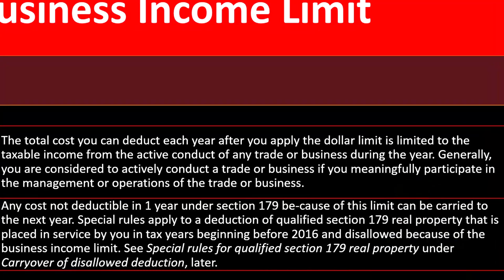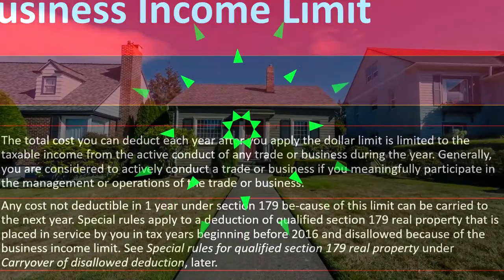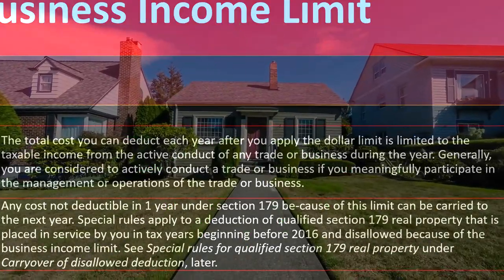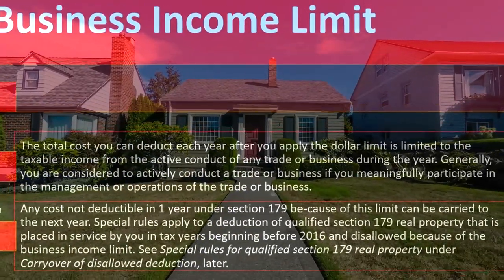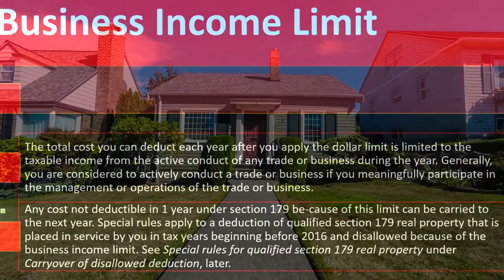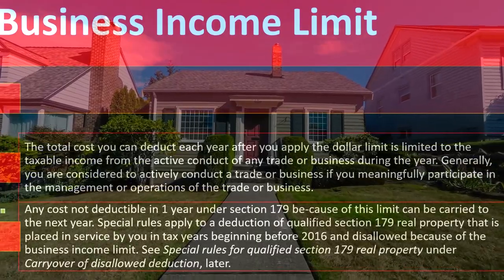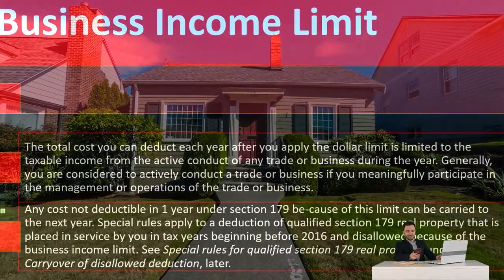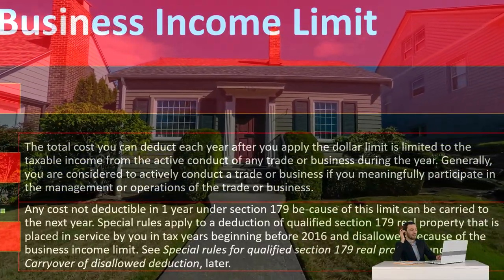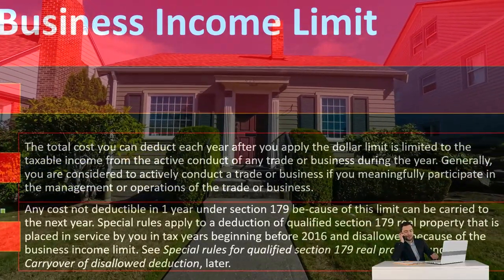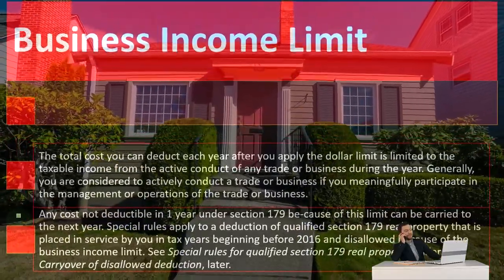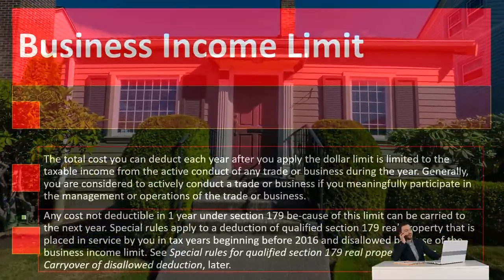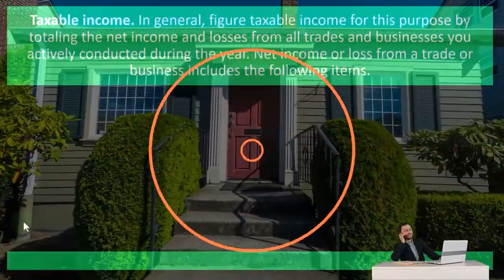Special rules apply to the deduction of qualified Section 179 real property that is placed in service in tax years beginning before 2016 and disallowed because of the business income limit. See the special rules for qualified Section 179 real property under 'Carryover of Disallowed Deduction' later.